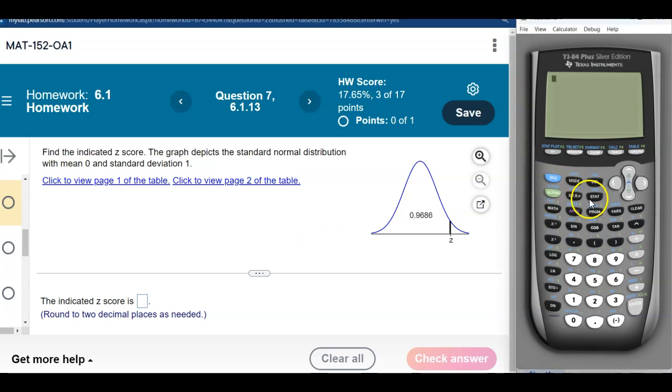So this procedure is underneath the VARS menu, just like normal.cdf is. Right below it is inverse norm. If you come down, there's inverse norm, hit enter. Inverse norm wants to know what is the area to the left, and it's 0.9686 here. And then it wants to know the mean and standard deviation. Because it's standard normal, the mean is zero, standard deviation is one. So I can just scroll down to paste.